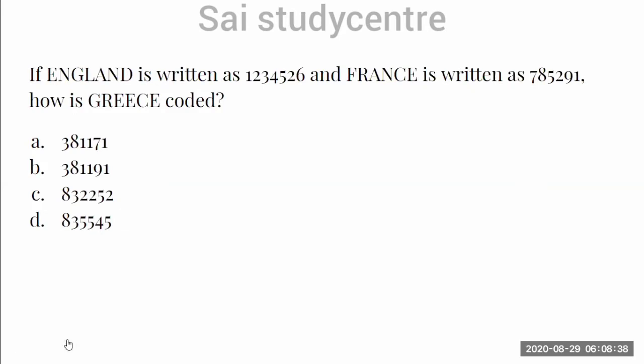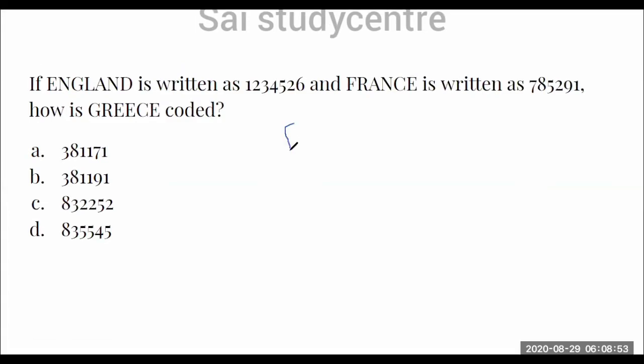Let's move on with a few examples to understand it better. The first one: England is written with some code and France is written with some code. Now we are asked to find out how Greece is coded. When such a type of question is given, you first write the letter because each alphabet is denoted by a number value. So I have written England. What are all the numbers given for each alphabet? I am going to write it below. E is given as 1, N is 2, G is 3, L is 4, A is 5.